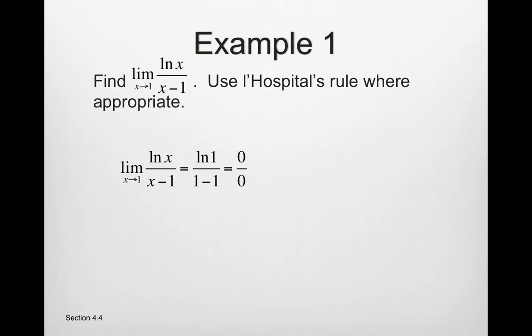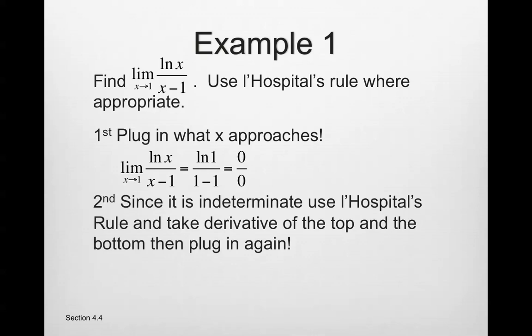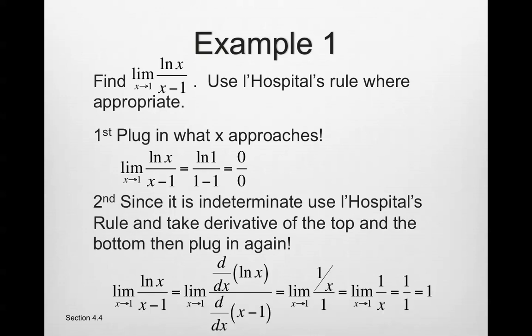Find the limit as x approaches 1 of ln(x)/(x − 1). Use L'Hopital's rule where appropriate. First, plug in 1: we get 0 over 0, which is indeterminate. Next, apply L'Hopital's rule and take the derivative of the top and bottom. The derivative of ln(x) is 1/x, and the derivative of (x − 1) is 1. Therefore the limit equals 1/x evaluated at x = 1, which gives 1/1 = 1.